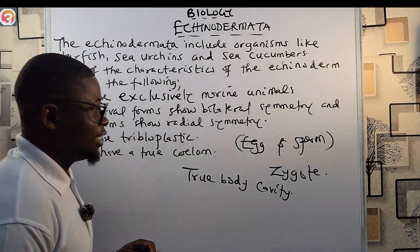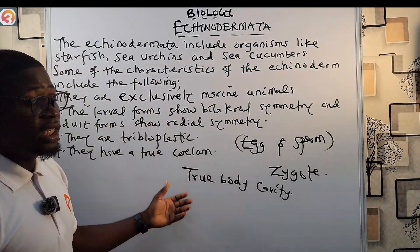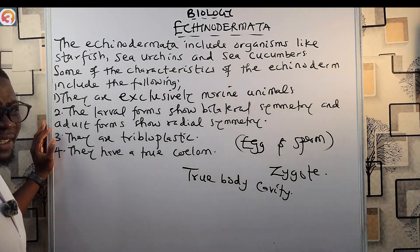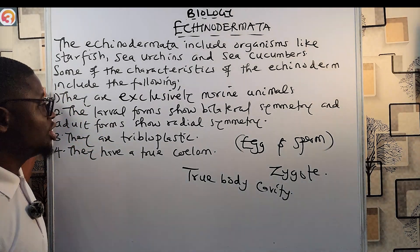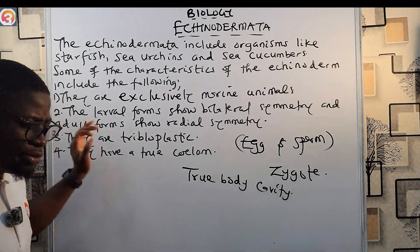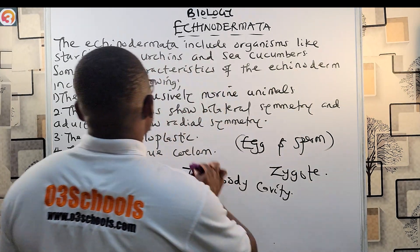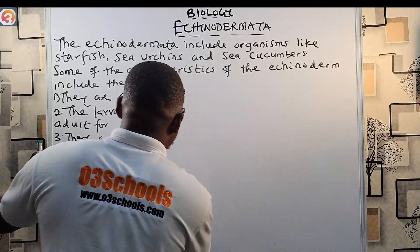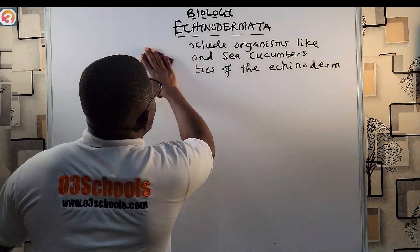That is all we need to know about the echinoderms: the examples are starfish, sea urchins, and sea cucumbers; they are exclusively marine animals living in salt water of oceans and seas; the larval form shows bilateral symmetry while the adult form shows radial symmetry; they are triploblastic and have a true coelom. Now I'll introduce the vertebrates. Vertebrates are animals that have a backbone or spinal column.